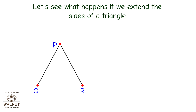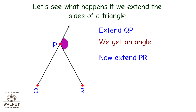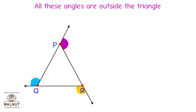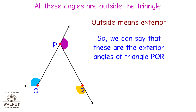Let's see what happens if we extend the sides of a triangle. Extend QP — we get an angle. Extend PR — we get another angle. Extend RQ — we get another angle. All these angles are outside the triangle. Outside means exterior, so we can say that these are the exterior angles of triangle PQR.